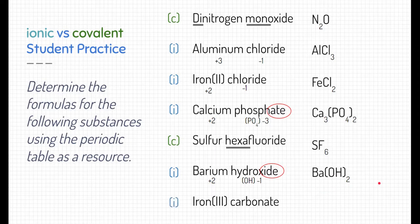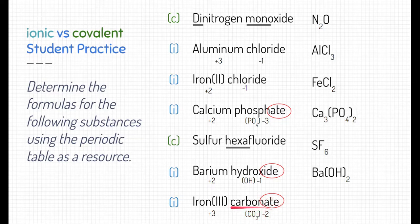Our last practice example is ionic: iron(III) carbonate. Iron here has a positive three charge, and carbonate is a polyatomic ion — its formula is CO3 with a charge of minus two. Based on their charges, the whole compound would be written with two irons and three carbonates all attached to each other: Fe2(CO3)3.